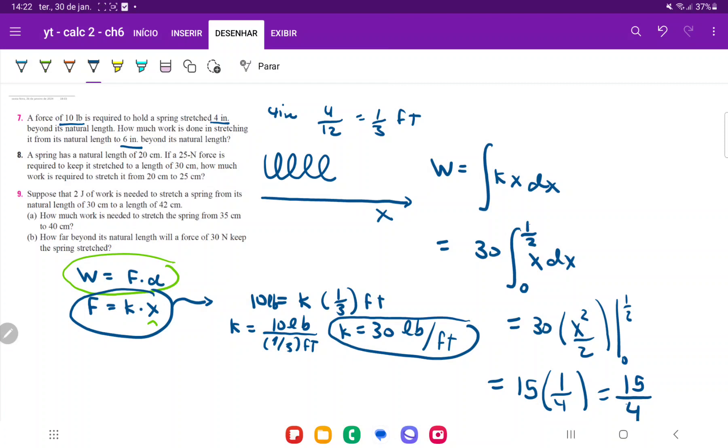But now we do have to put the units of work. So that's because force is pounds and distance is feet. So it's pounds times feet. And that is it for problem number seven.